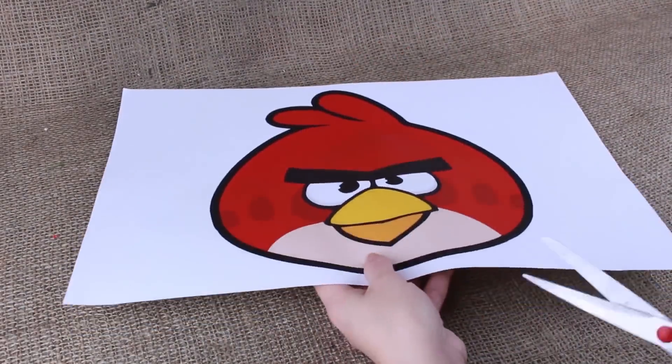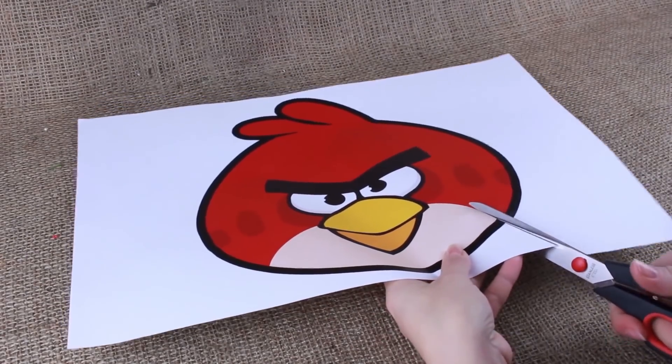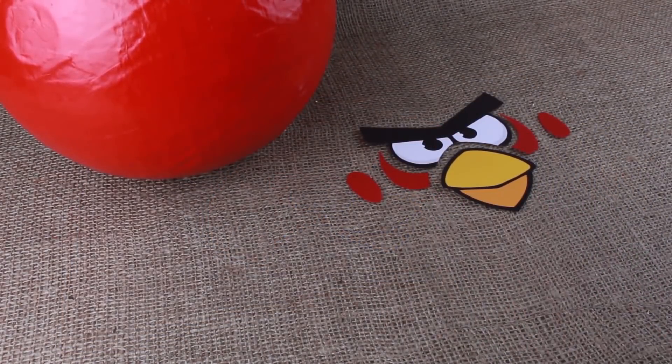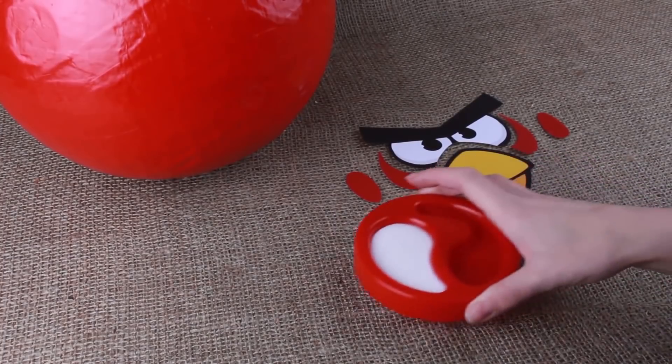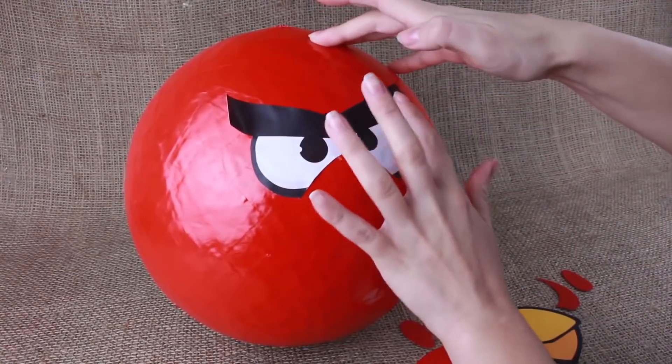Take a printed Angry Bird picture. You can find it in the description of this tutorial. Cut out the image. It'll be better if you divide the image into different parts and cut out each one for easy attachment. Use white glue. Add glue to the back. Carefully attach and smooth.